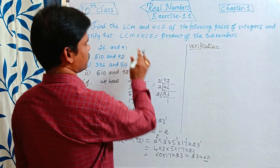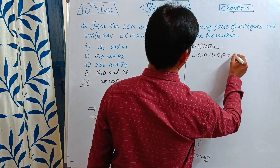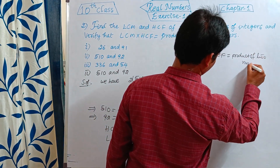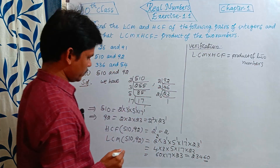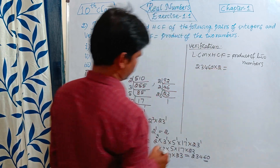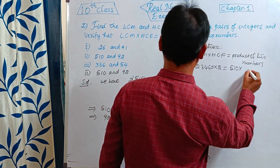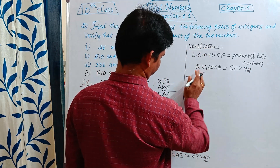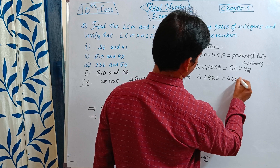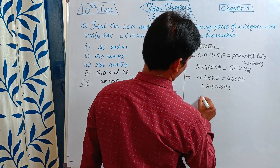Verification for 510 and 92: product of LCM and HCF = 23460 into 2 = 46920. Product of the two numbers = 510 into 92 = 46920. LHS equals RHS, hence verified.